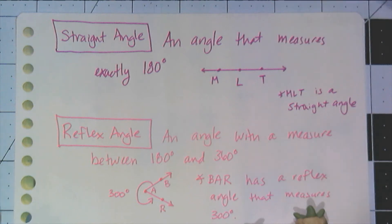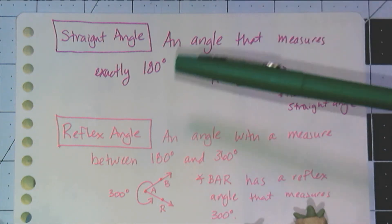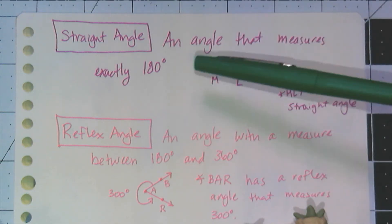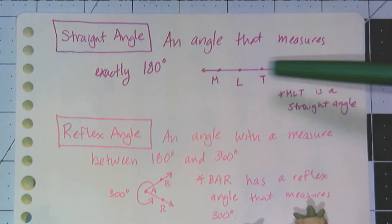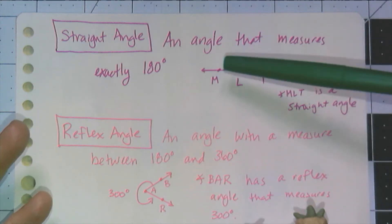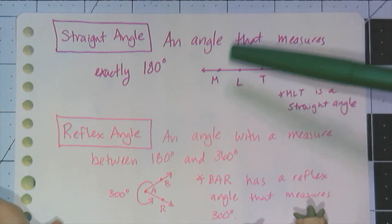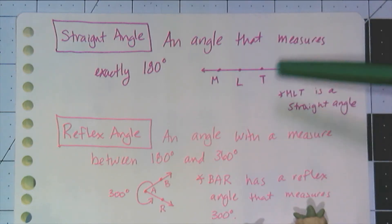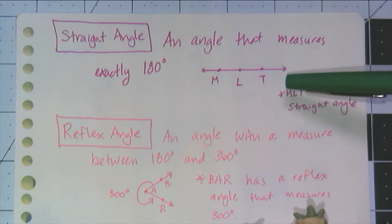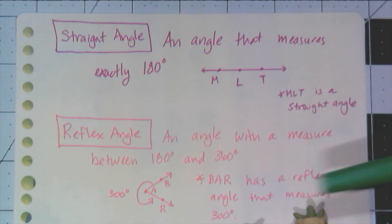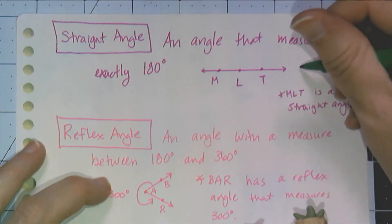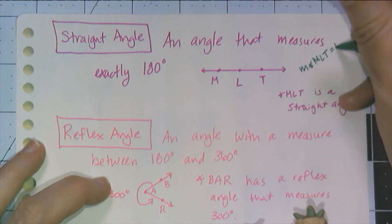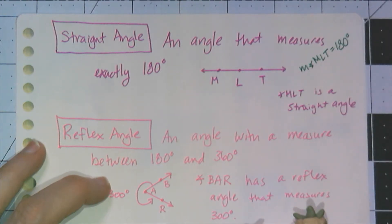One of them is called a straight angle, and this is an angle that measures exactly 180 degrees. The picture of it is just a line with three collinear points on it. I chose M, L, and T, so I can say that angle MLT is a straight angle. And I can say the measure of angle MLT is 180 degrees, which by definition means it's a straight angle.